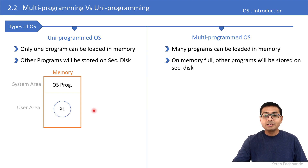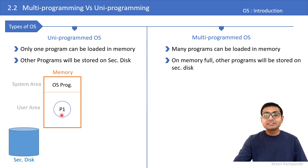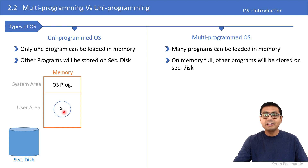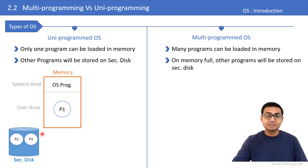Let's say the user loads program P1 into the user area and also wants to execute other programs. But in a uniprogrammed OS, one program is already loaded in memory. Let's assume the user area size is 1 GB and the program size is 100 MB. So even if roughly 900 MB are available, the next programs will not be loaded in memory — they will be shifted onto the secondary disk by the operating system.